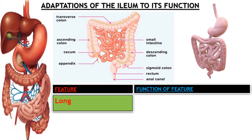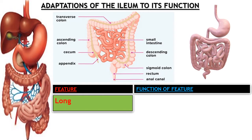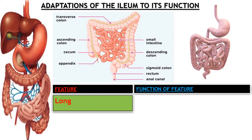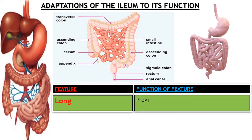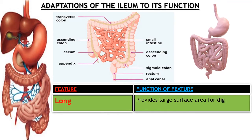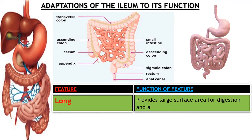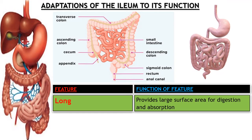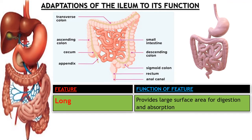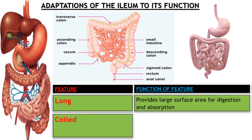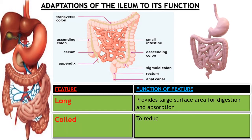Number one: the ileum is long. In fact, the ileum is about 3.5 meters long — quite a long distance — and this provides a large surface area for absorption and for digestion of food. The larger the surface area, the more available it is for completing digestion and absorbing all the products of digestion.